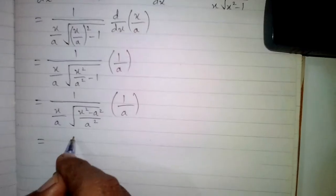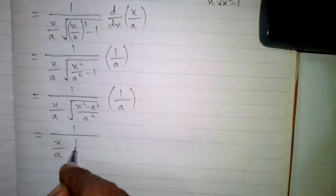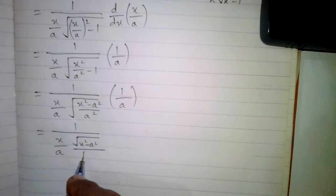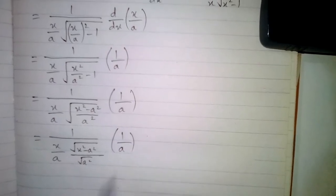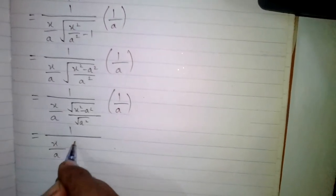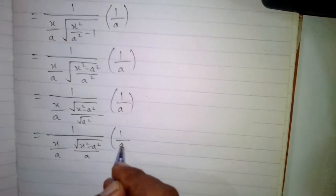Now this will be equal to 1 upon (x/a), and this square root will apply on both numerator and denominator. So we have square root of x squared upon a squared over square root of a squared, multiplied by 1 upon a. Then 1 upon (x/a) times square root of x squared minus a squared upon a, multiplied by 1 upon a.